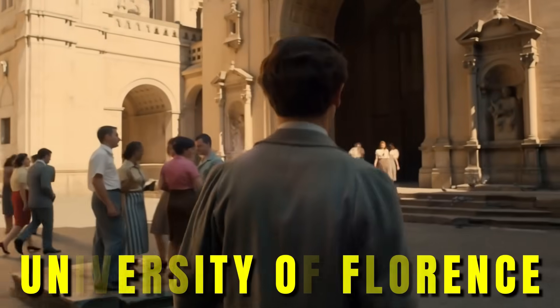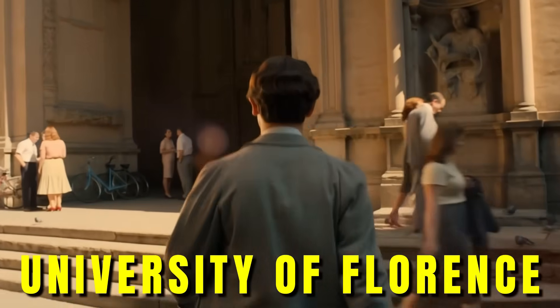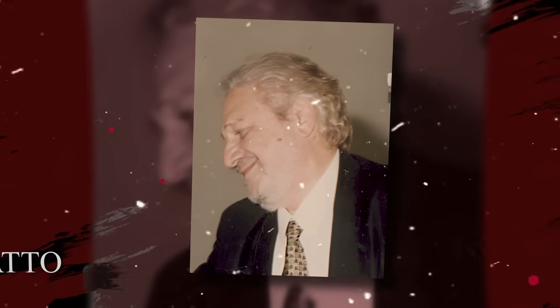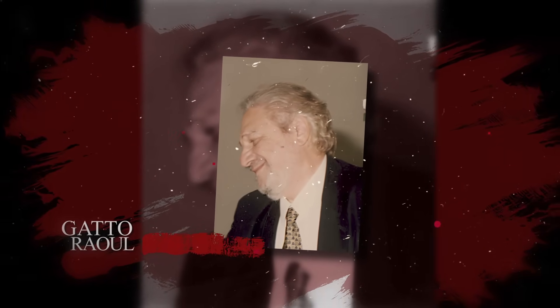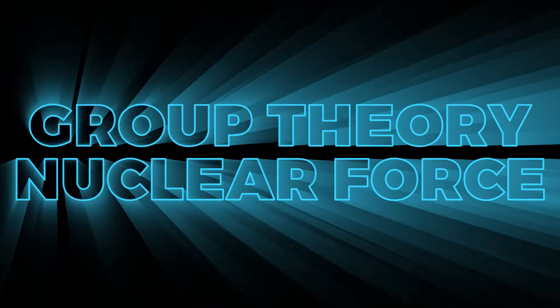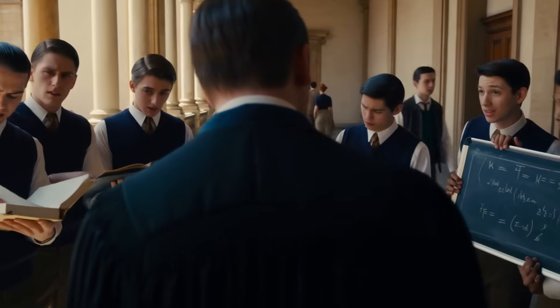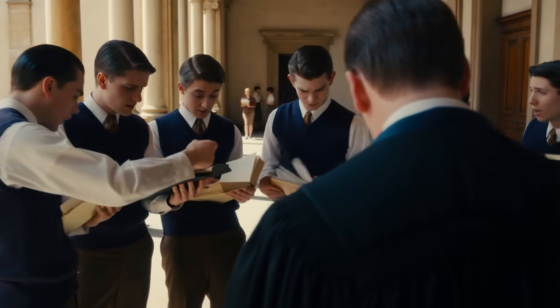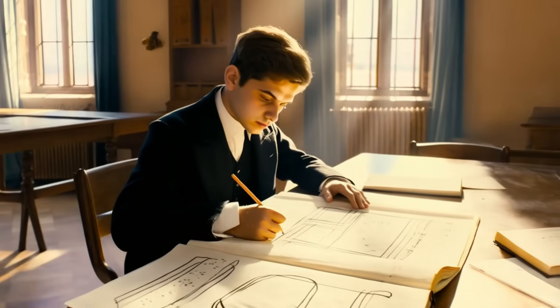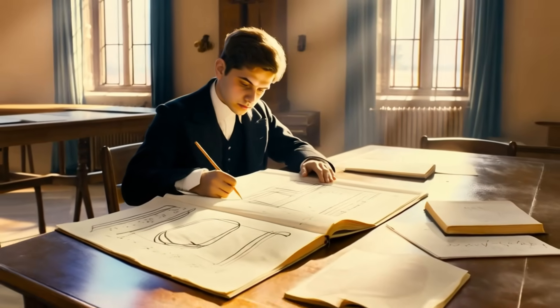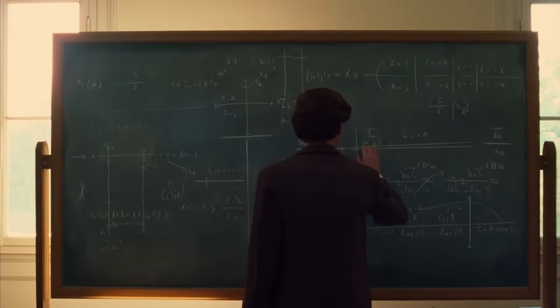By the early 1960s, Veneziano entered the University of Florence, one of Italy's leading centers for physics. Here, under the mentorship of Professor Raul Gatto, he dove into the mathematical language of the universe, group theory, and the strong nuclear force. Gatto's group was small, but it was daring, pushing the boundaries of how symmetries could explain the strange new particles emerging from accelerators around the world. Gabriele was captivated. He wasn't just solving problems. He was searching for a deeper pattern, one that could tie everything together.